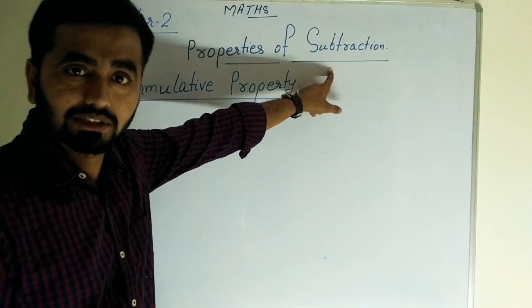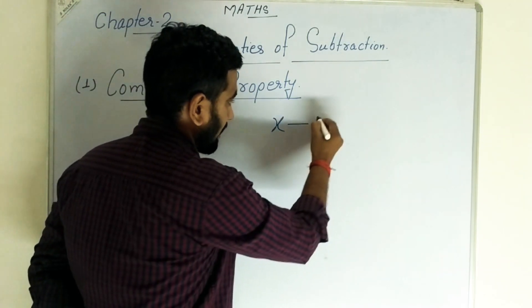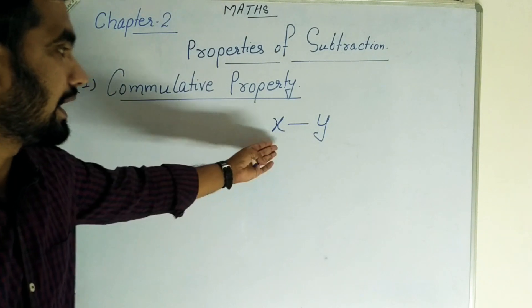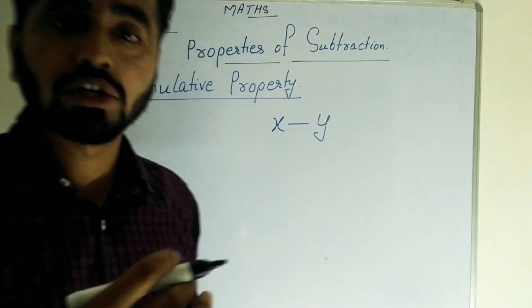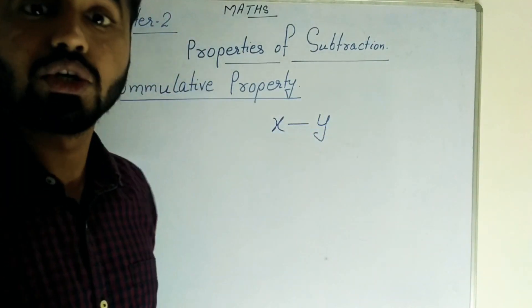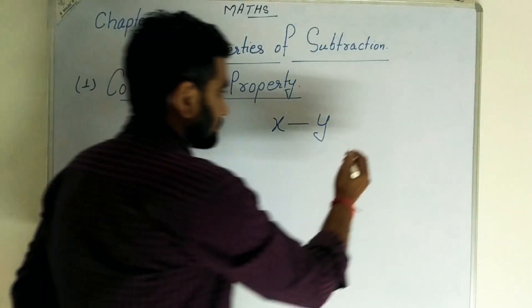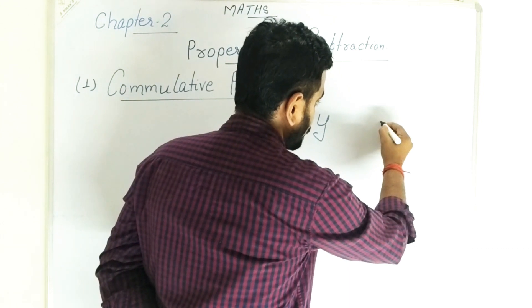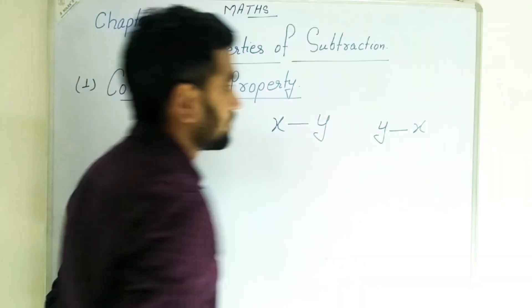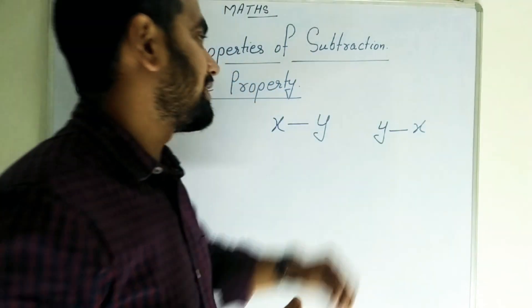For properties of subtraction, we consider x minus y. Suppose that x and y are both rational numbers. x minus y means y subtracted from x, and y minus x means x is subtracted from y.